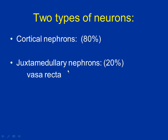Then 20% are called juxtamedullary nephrons because they're next to the medulla — they go deeper down into the medulla. Interestingly, only 20% of them are juxtamedullary, but these are the ones that do the most concentrating. They're the ones that make your urine extremely concentrated. They have their own special blood vessels called the vasa recta, which are basically modified peritubular capillaries unique to juxtamedullary nephrons.